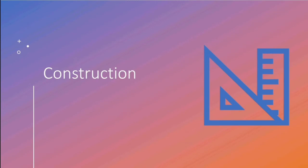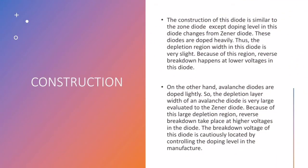Construction. The construction of this diode is similar to the Zener diode except doping level in this diode changes from Zener diode. These diodes are doped heavily, thus the depletion region width in this diode is very slight. Because of this region, reverse breakdown happens at lower voltages in this diode.